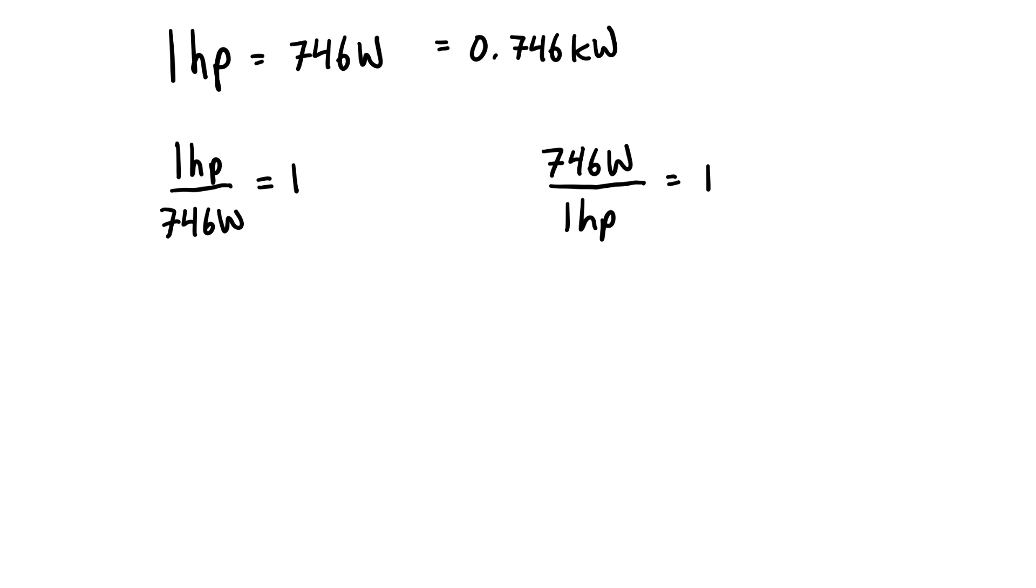For example, if we have, let's say, a 5 horsepower motor and we want to figure out how many watts or kilowatts it is, we'll just multiply it by unity. We're going to pick the one that has horsepower on the bottom so our units are going to cancel.